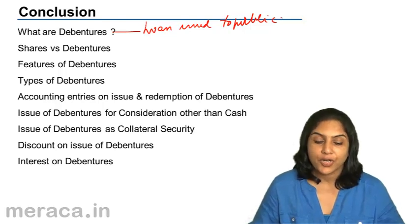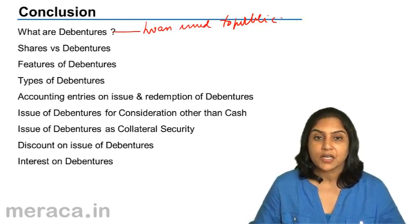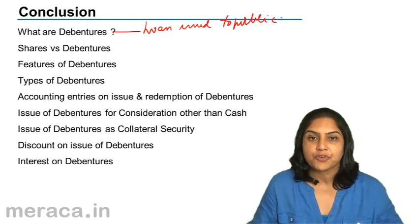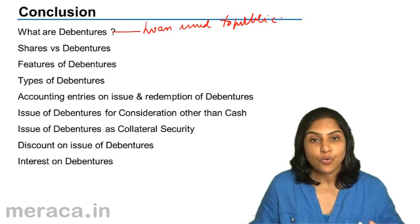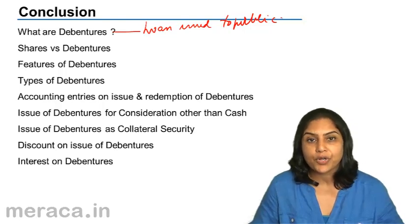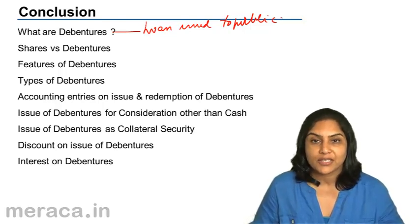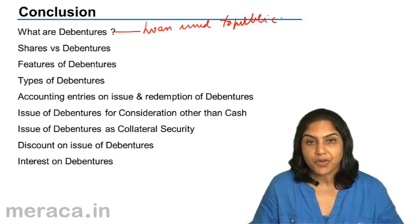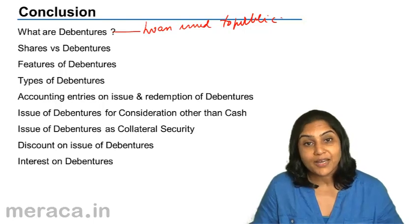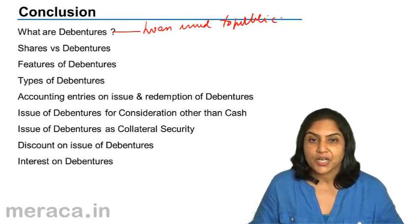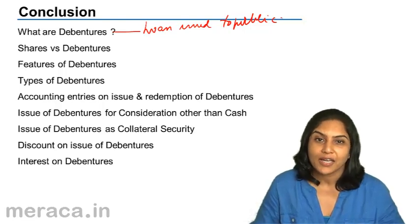We also compared equity shares with debentures. The basic difference is that a shareholder is an owner of a company with voting rights, whereas a debenture holder is a lender with no voting rights and no control. But they are entitled to a fixed rate of interest and are usually redeemable after a period of time, whereas equity shares are repaid only on liquidation.